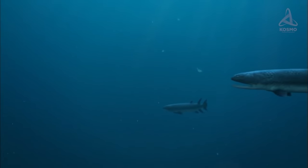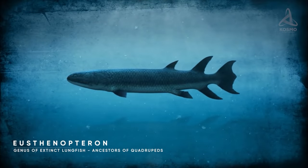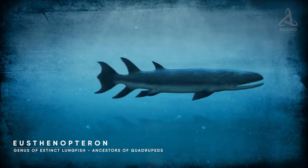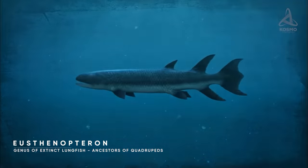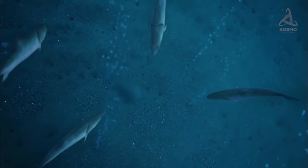These were first lungfish, and in particular, sarcopterygii. Eusthenopteron is a typical representative of these. Even though this strong-finned fish wasn't keen on settling on land, it was already able to breathe atmospheric air and stay out of water for certain periods.